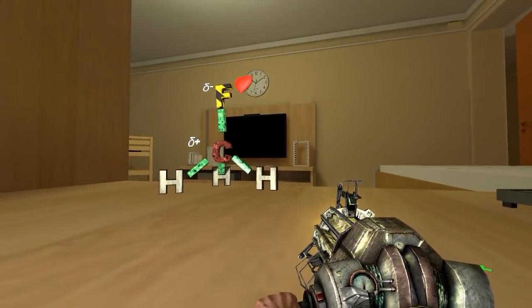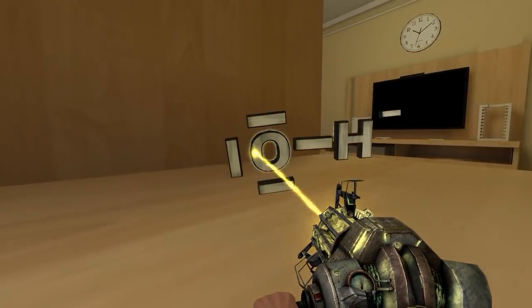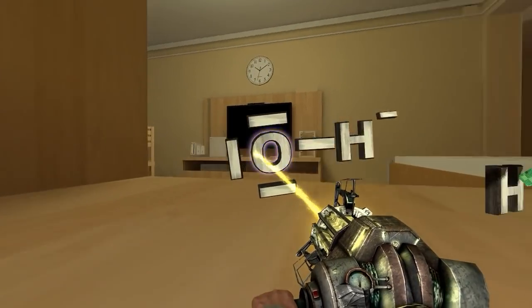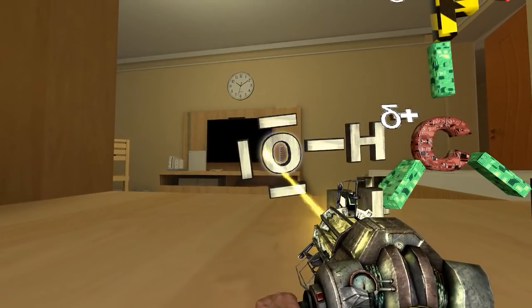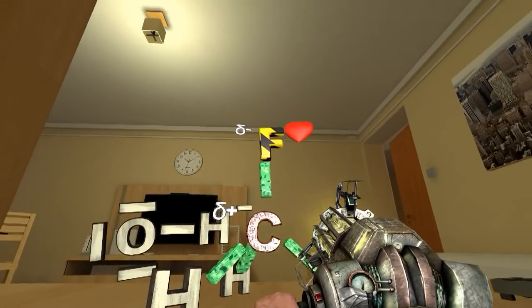Now back to the nucleophile, the thing that loves positives. That's going to be attracted towards the carbon because now the carbon's a little bit positive. Since this is a substitution reaction, we're going to switch the fluorine for the hydroxide.